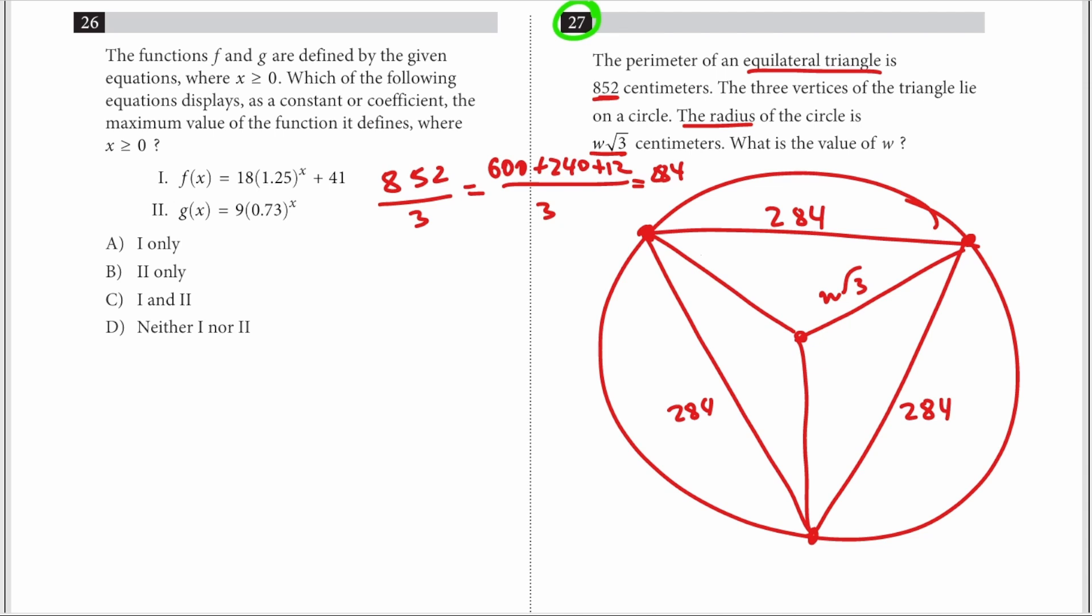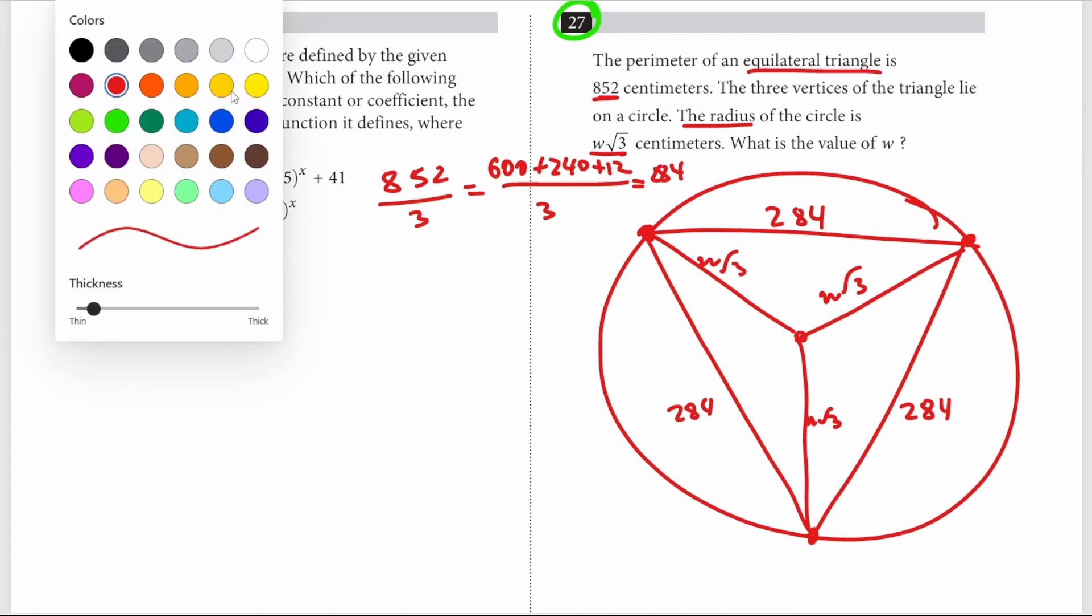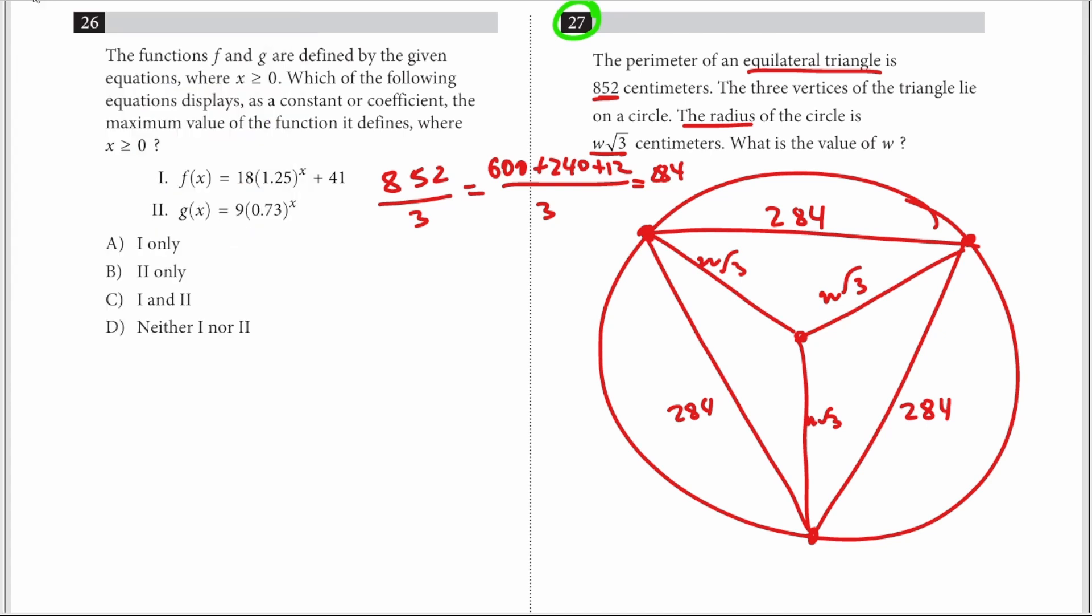Now, think about these three triangles formed by the inside of this equilateral triangle. I'm talking about this triangle, that triangle, and this triangle. They're all equal to one another because of SSS. Because w√3 are equal to each other, and 284 is also all equal to each other. Therefore, all three triangles are congruent.